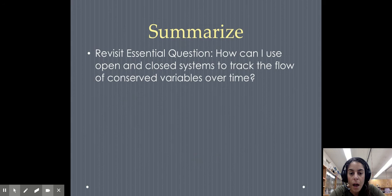The difference between open and closed system really is what variables can actually move in and out of that system. Open system? They can. Closed system? Uh-uh. So here's your summary. And we'll be talking about this quite a bit this semester, even after this unit. How can I use open and closed systems to track the flow of conserved or saved variables over time?